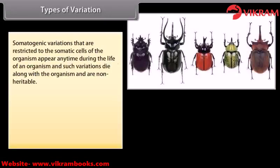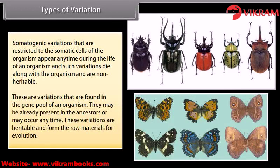Somatogenic variations are restricted to the somatic cells of the organism, can appear any time during the life of an organism, die along with the organism, and are non-heritable. Germinal variations are found in the gene pool of an organism, may already be present in ancestors or occur any time, and are heritable, forming the raw materials for evolution.